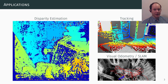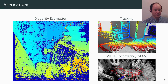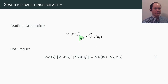Our gradient-based similarity measure allows us to obtain more accurate disparity maps and increases the accuracy in direct image alignment for tracking without the necessity for laborious compensation. The key insight is that gradient location and orientation are much more resilient to appearance changes. We express the gradient orientation by its relation to the vector dot product.